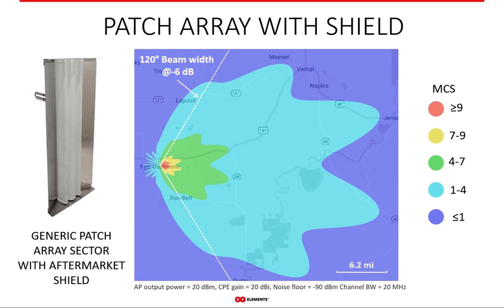In hopes of mitigating collocation issues, many WISPs install shields to the back of these antennas. While the shield might dampen back radiation a little bit, you can see what it does to the rest of the radiation pattern — its shape becomes rather wild. This can potentially make your life more difficult, because customers close to the edges of the sector can find themselves outside it. In this case, the back radiation did not really change much while the main lobe changed substantially — which is undesired. Shields are not a good idea for dealing with noise.